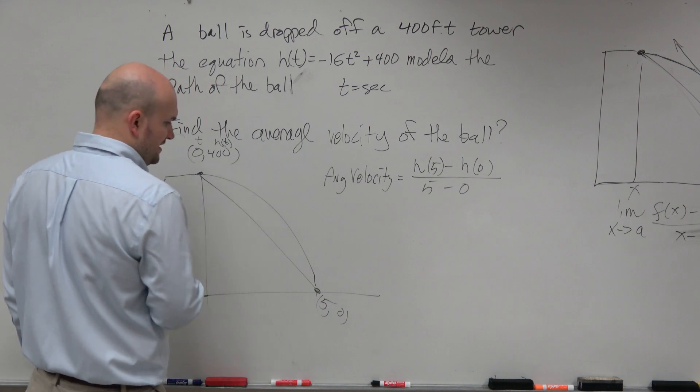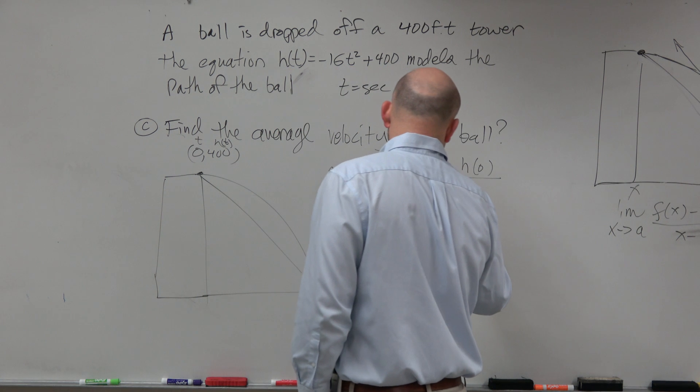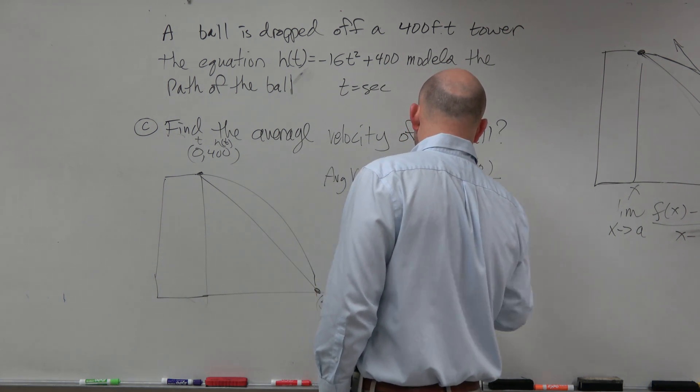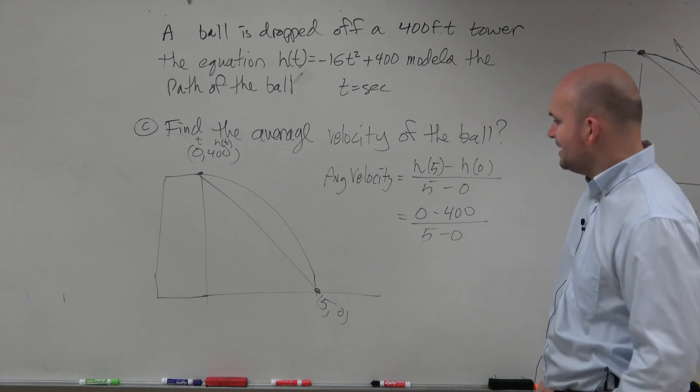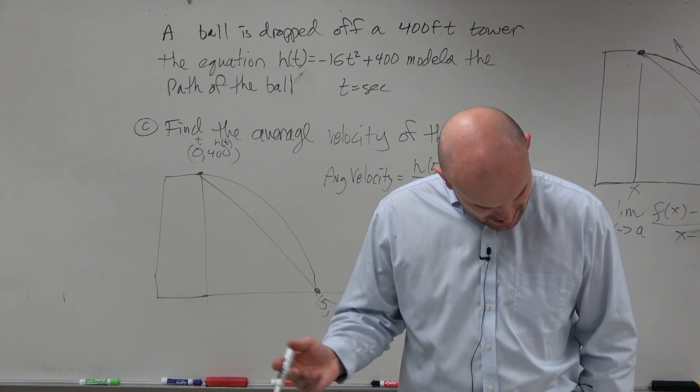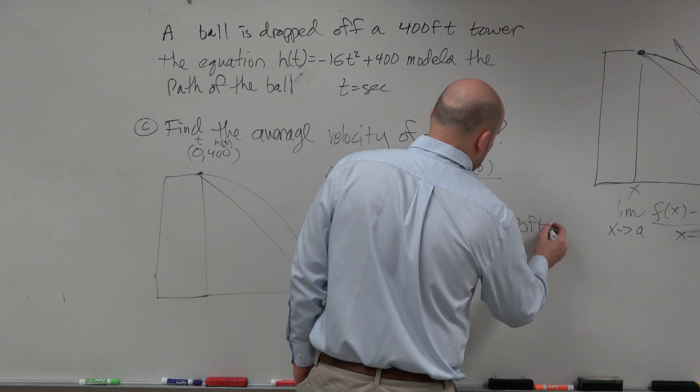So h of 5 is going to be 0 minus 400 all over 5 minus 0, which is negative 400 over 5, which is going to be negative 80 feet per second.